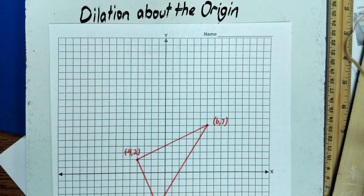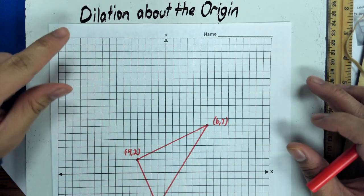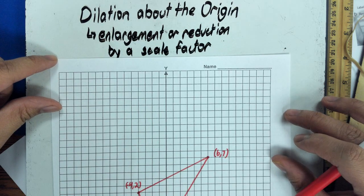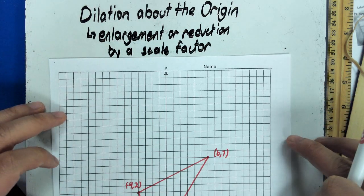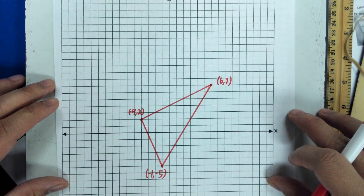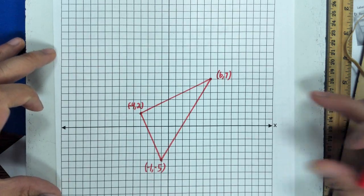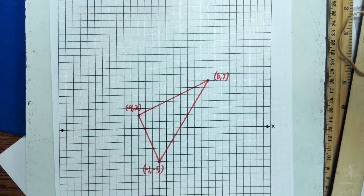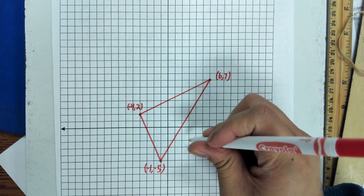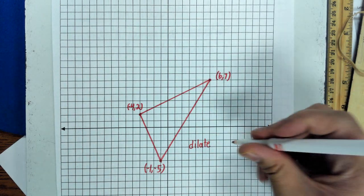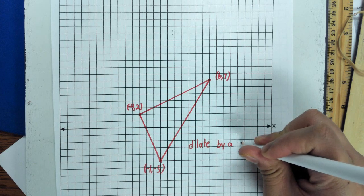Today I will show you how to do dilation about the origin. A dilation is an enlargement or reduction by a given scale factor. Suppose I have a triangle made by these three points: negative four, two; negative one, negative five; and six, seven. The problem tells us we are to dilate by a scale factor of two.